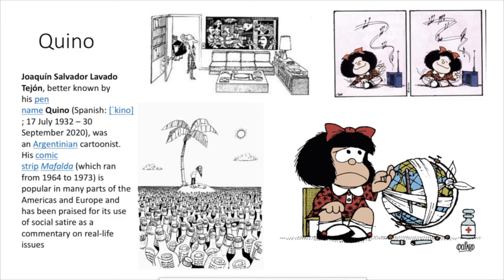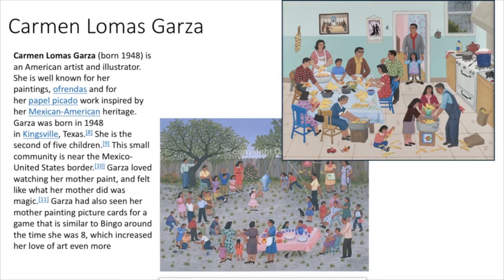This is Carmen Lomas Garza. She's an American artist and illustrator, well known for her paintings and ofrendas. She's still alive. She's also known for her papel picado — the cut paper flags that you sometimes see. Her artwork is inspired by her Mexican American heritage. She does a lot of paintings of large family groups with a lot going on. She was the second of five children and is from Kingsville, Texas, right on the border of Texas and Mexico.